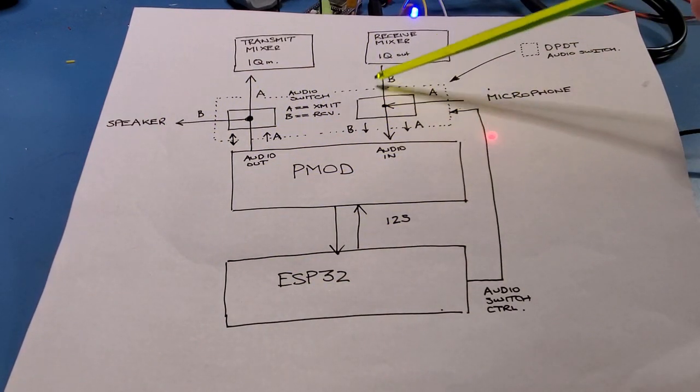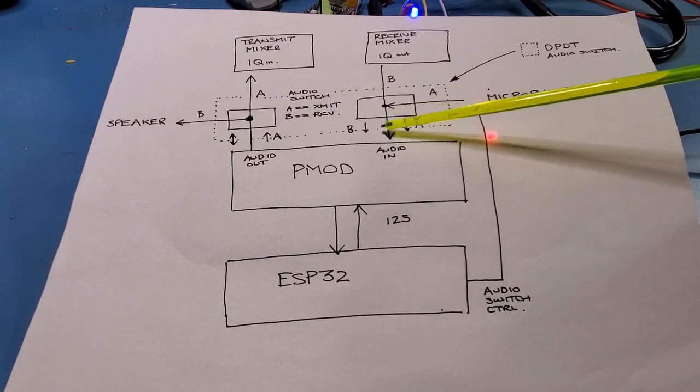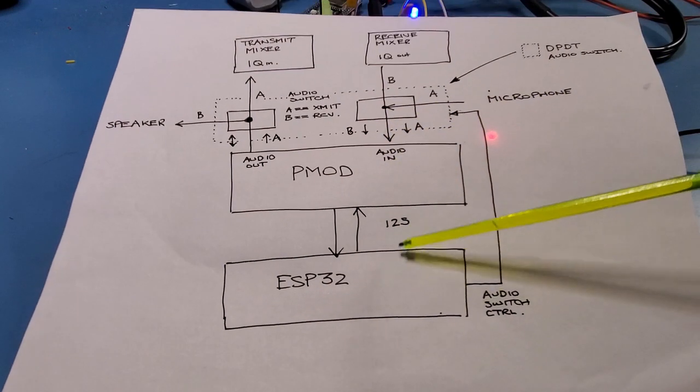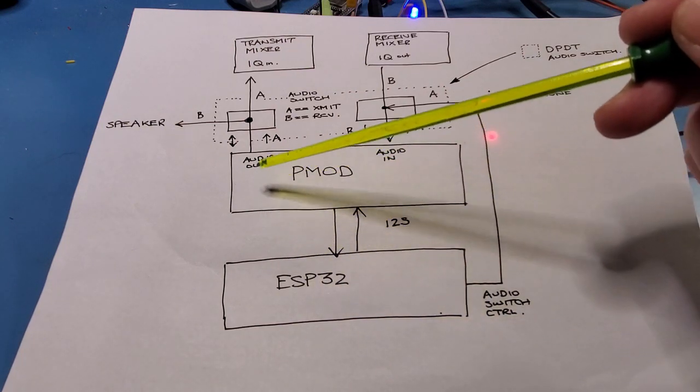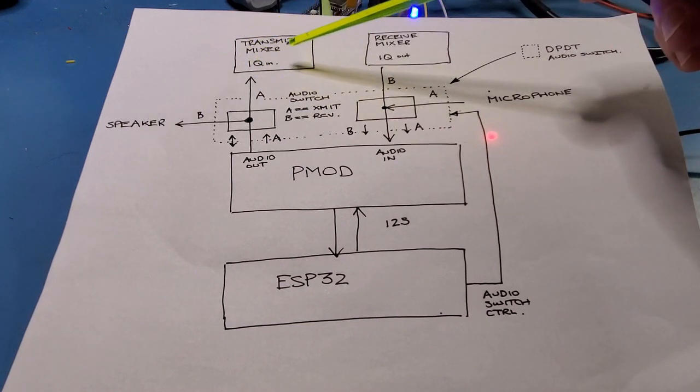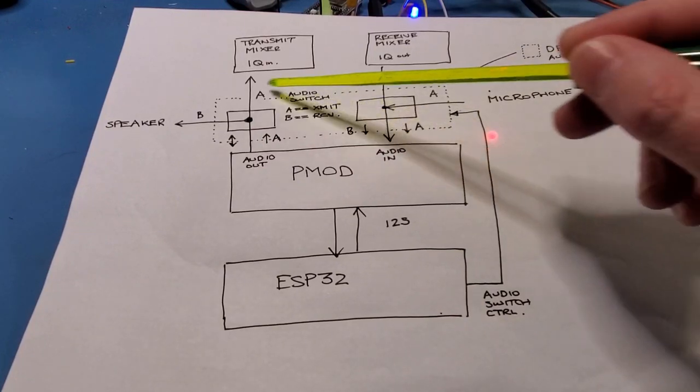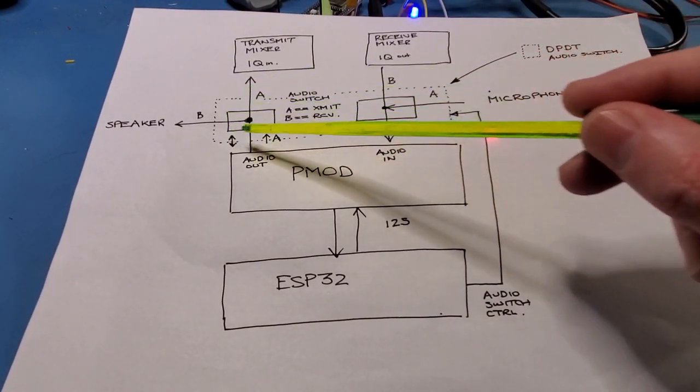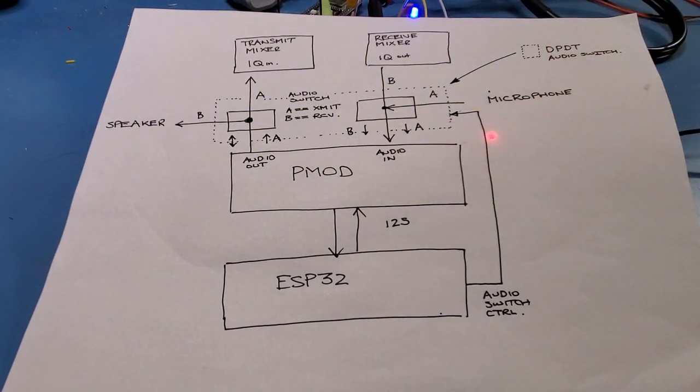So this is the receive pathway. On transmit we have the audio from the microphone passes in to the PMOD board gets processed in the ESP32 and then goes out through the PMOD board and through to the transmit mixer for transmission. So you can see this part in the dotted line in the middle that's where I need that double pole double throw controlled switch and that's where the CD4066 comes in.